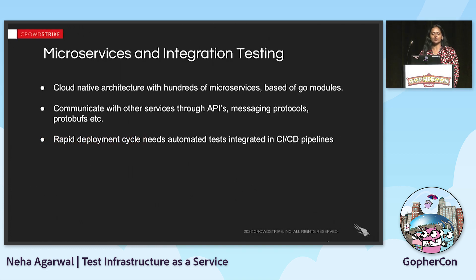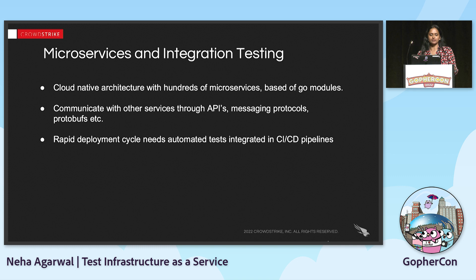At CrowdStrike, we have a cloud-native architecture with hundreds of microservices, and they are all based off of Go modules. These services talk to each other using APIs, messaging protocols, protobufs, etc. There is a rapid deployment cycle, and it requires that we run all the integrated tests in the CI/CD pipelines.